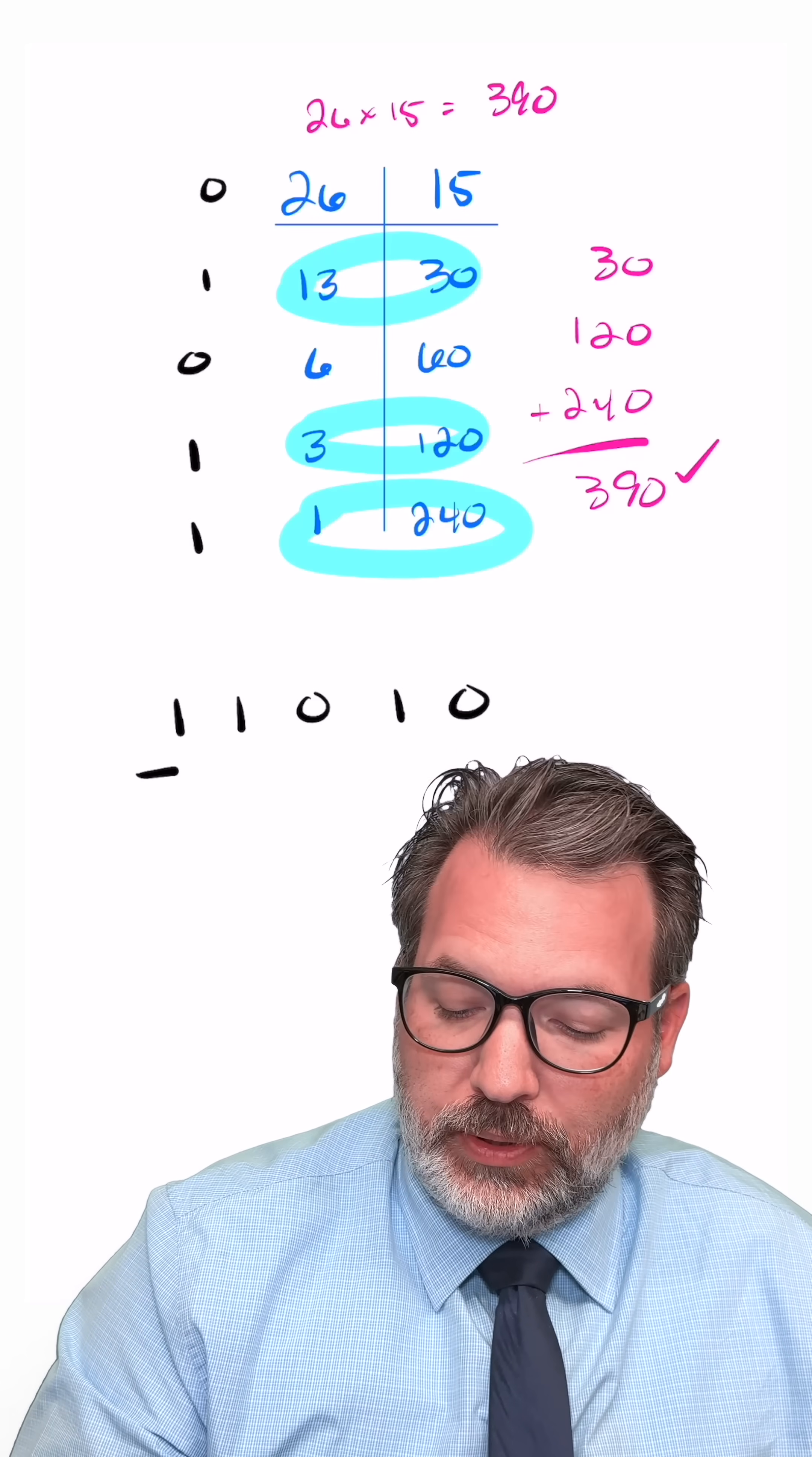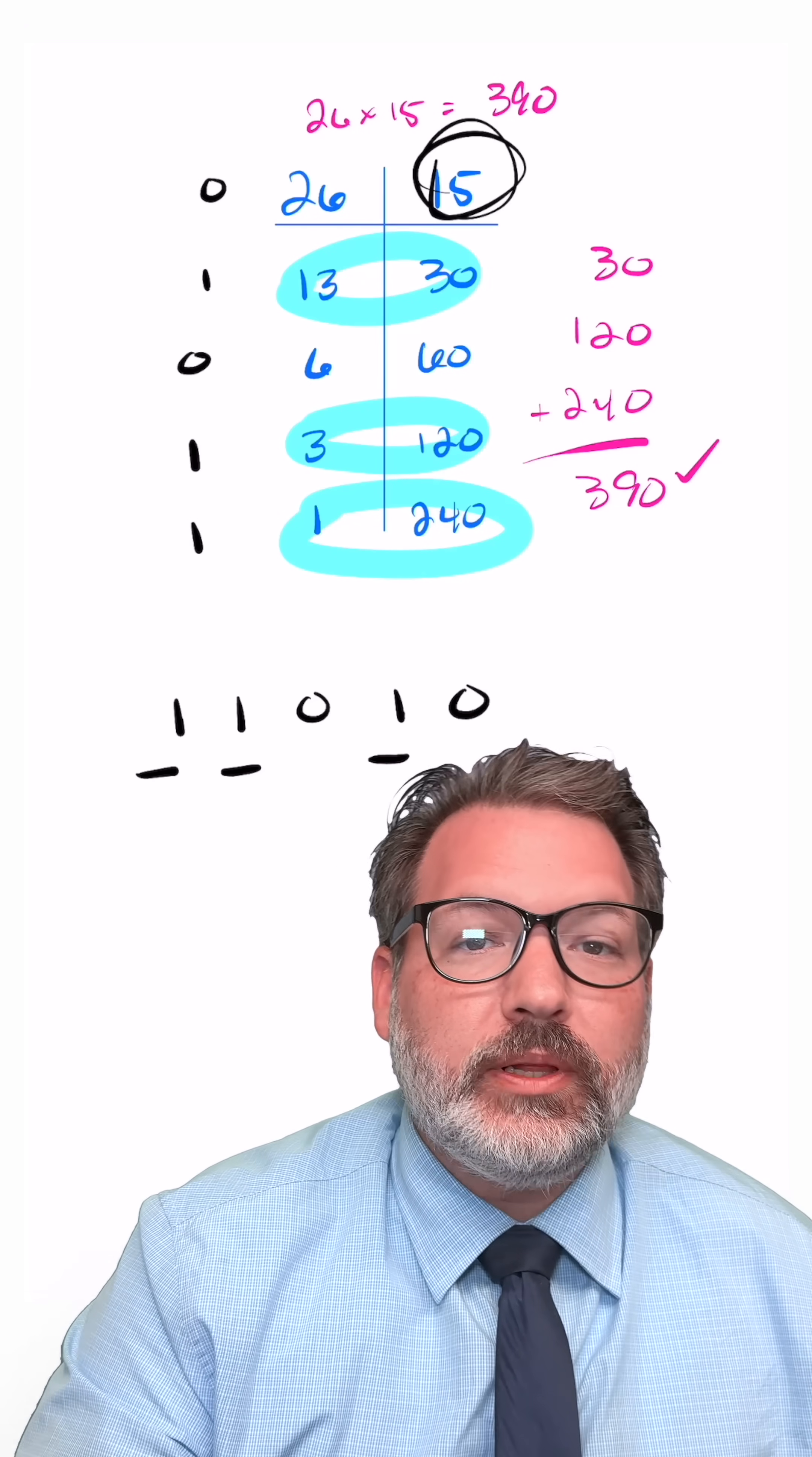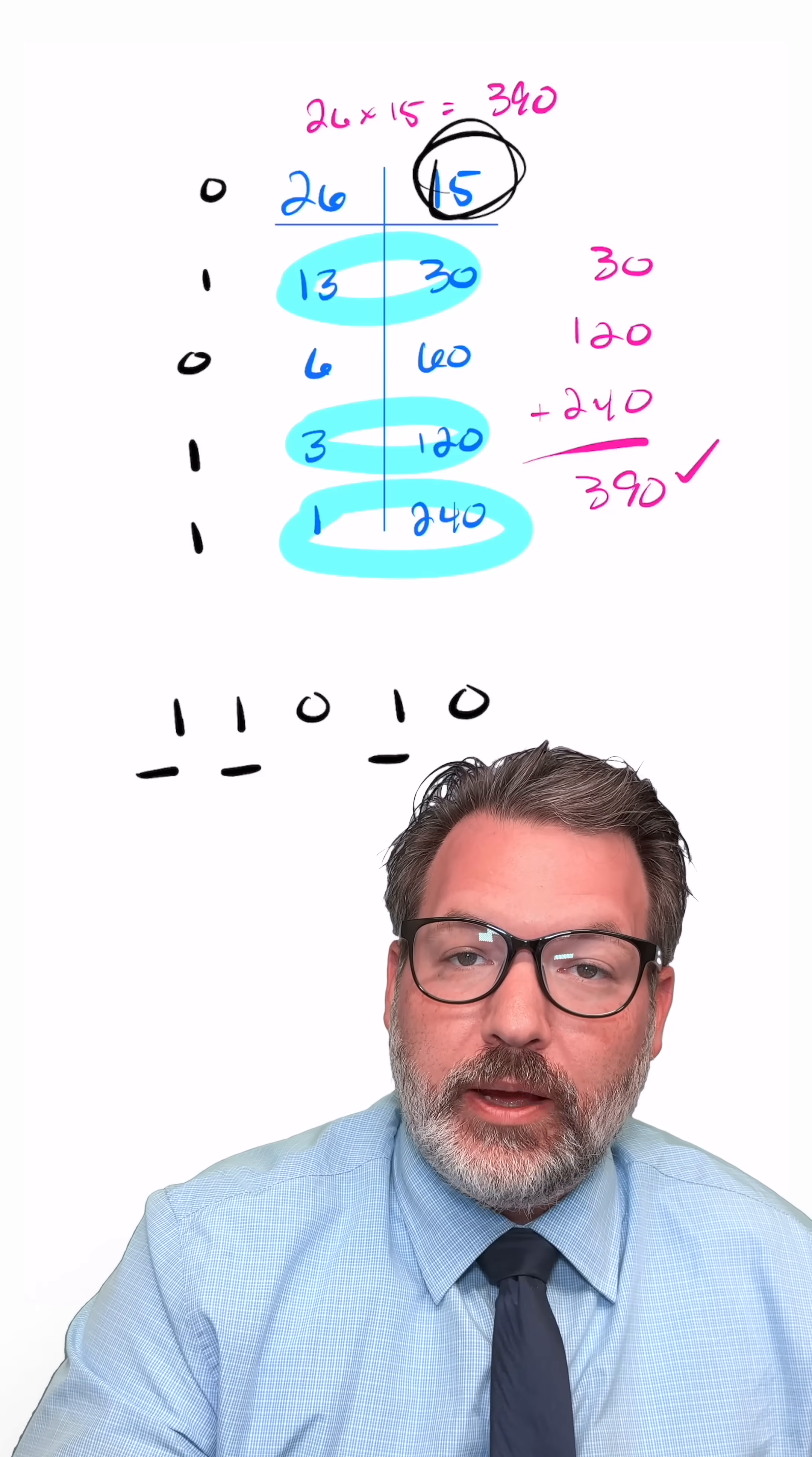In binary, we're looking at the 16s place, the 8s place, and the 2s place. The right side of the table is giving us the value to multiply each one of those places by from the binary number.